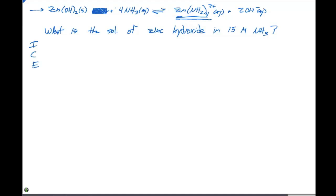The zinc hydroxide is a solid, does not show up in our ice table. The ammonia, we have an initial concentration of 15. Before we add any of the ammonia, or initially, we're gonna have a concentration of 0 for the complex ion and 0 for the OH minus.